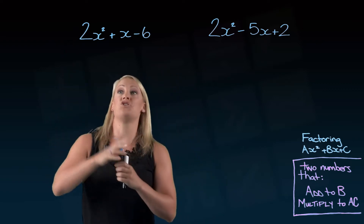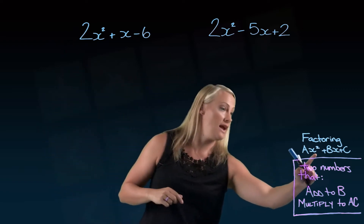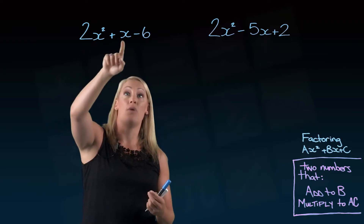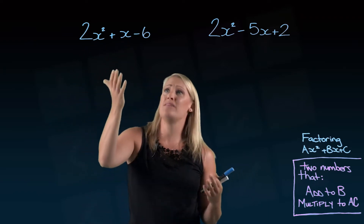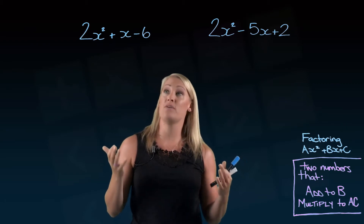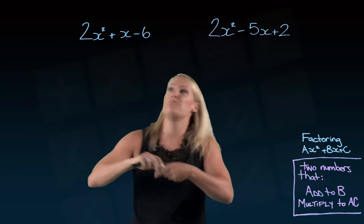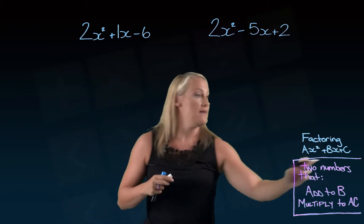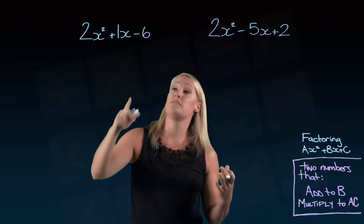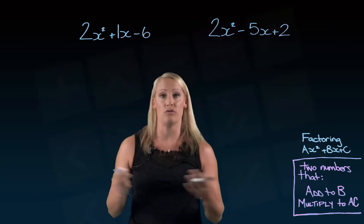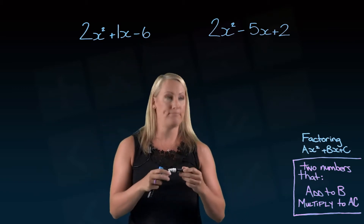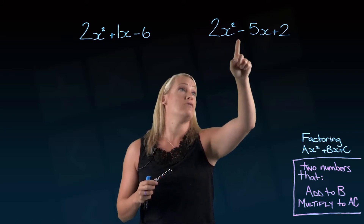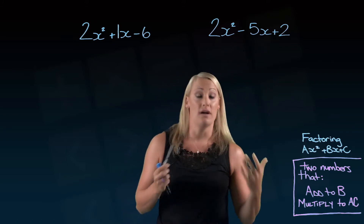So for example, if you look at this question, the number in front of the x squared is the a. So here, our a value is 2. Our b value — since we don't have a number sitting in front of that x — our b value in this case would be 1. And then our c value, which is the constant sitting on its own, would be not just 6, but negative 6. We want to make sure that we include the sign.